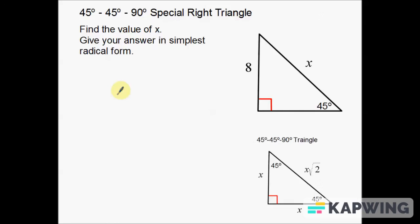Welcome back. Today what we're going to do in this video is talk about the 45-45-90 special right triangles. I'm going to talk about just two examples of solving for either the hypotenuse or one of the legs of a 45-45-90 triangle.